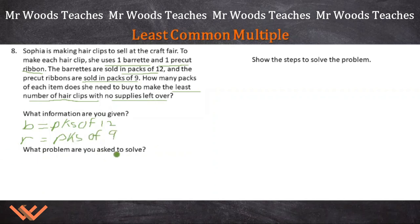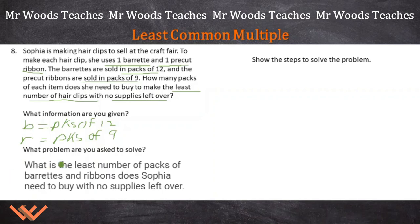The next question, what are you asked to solve? We're asked to find out what are the least number of packets of barrettes and ribbons that Sophia needs to buy so that there's nothing left over. If I was writing this up, I would put it in a complete sentence. What is the least number of packs of barrettes and ribbons does Sophia need to buy with no supplies left over? Right here. Right out of this information here. I got the barrettes and the packs and such. So it says each item right here and I just filled it in with ribbons and barrettes right there. So all the information is in here. You just have to be able to comprehend it and bring it down and write this sentence.